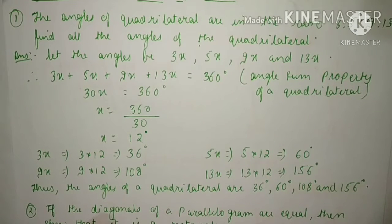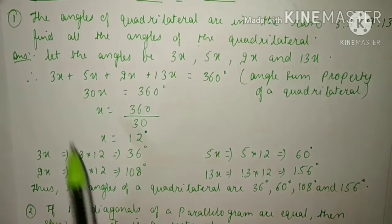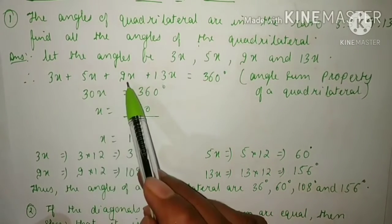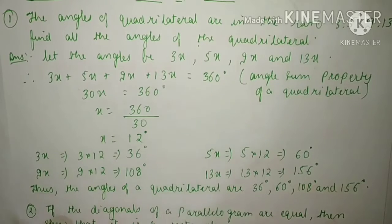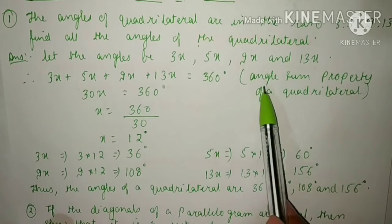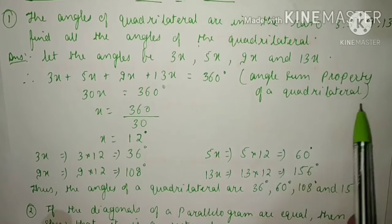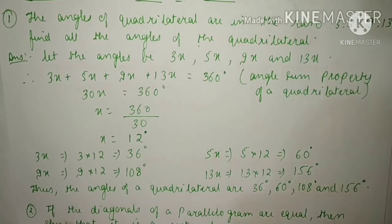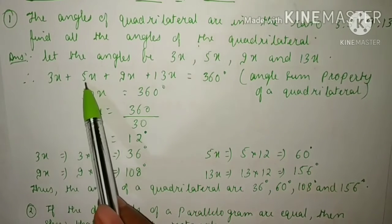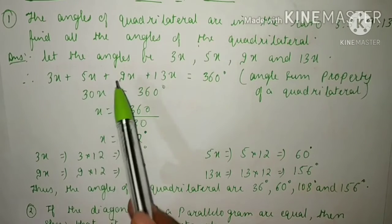We write 3x + 5x + 9x + 13x = 360°. The reason is the angle sum property of a quadrilateral. Now add them: 3+5 is 8, 8+9 is 17, 17+13 is 30, so 30x = 360°.